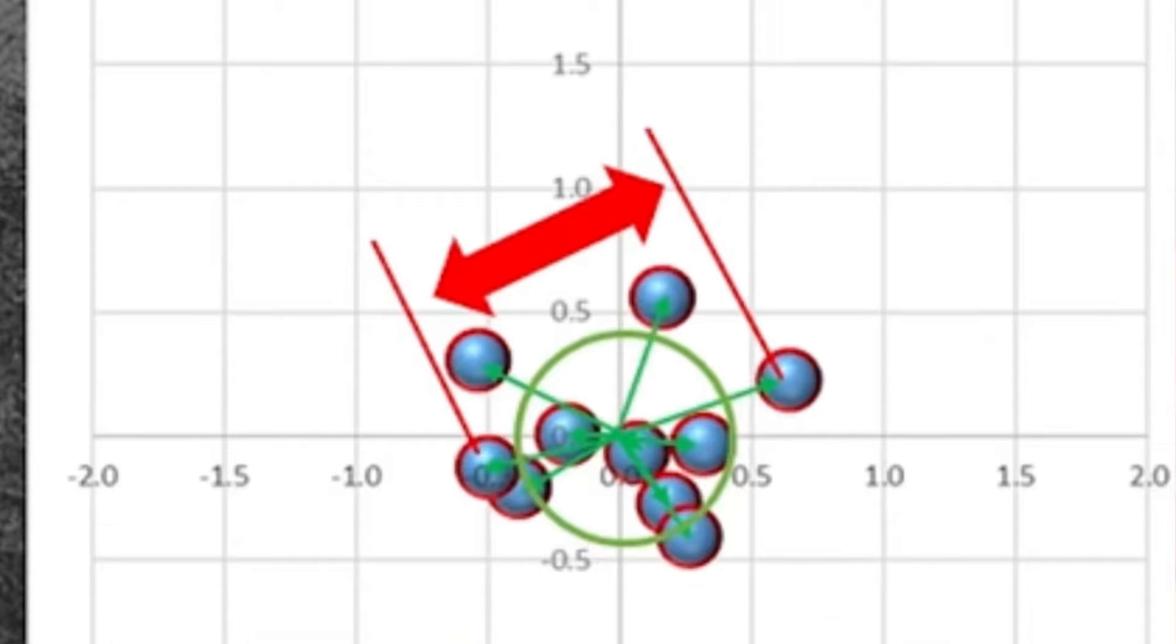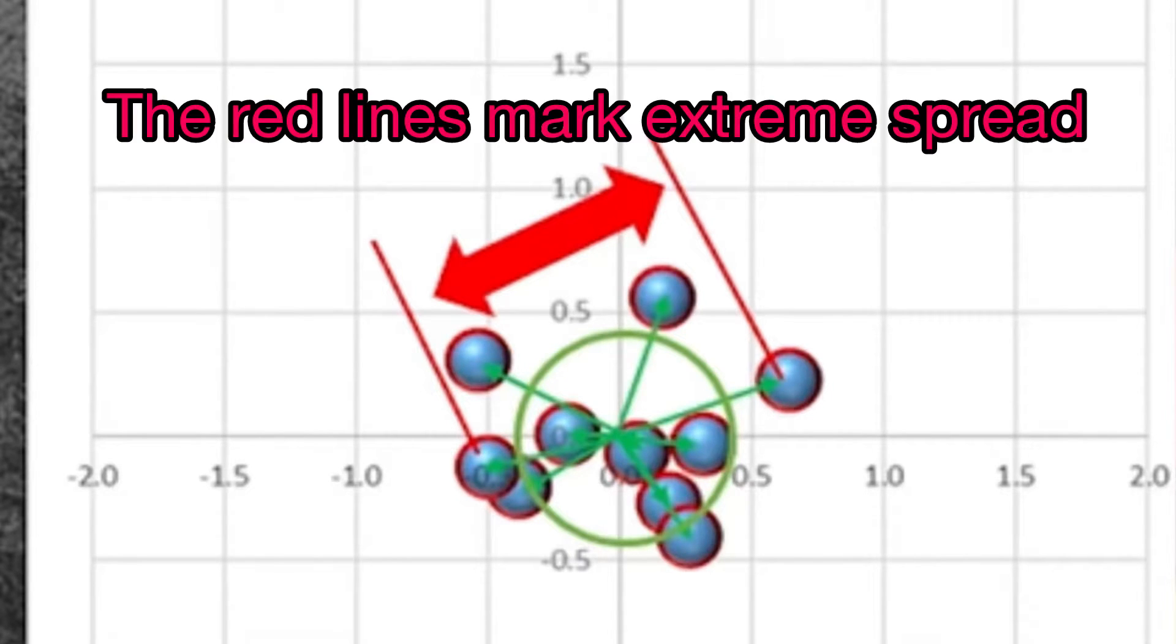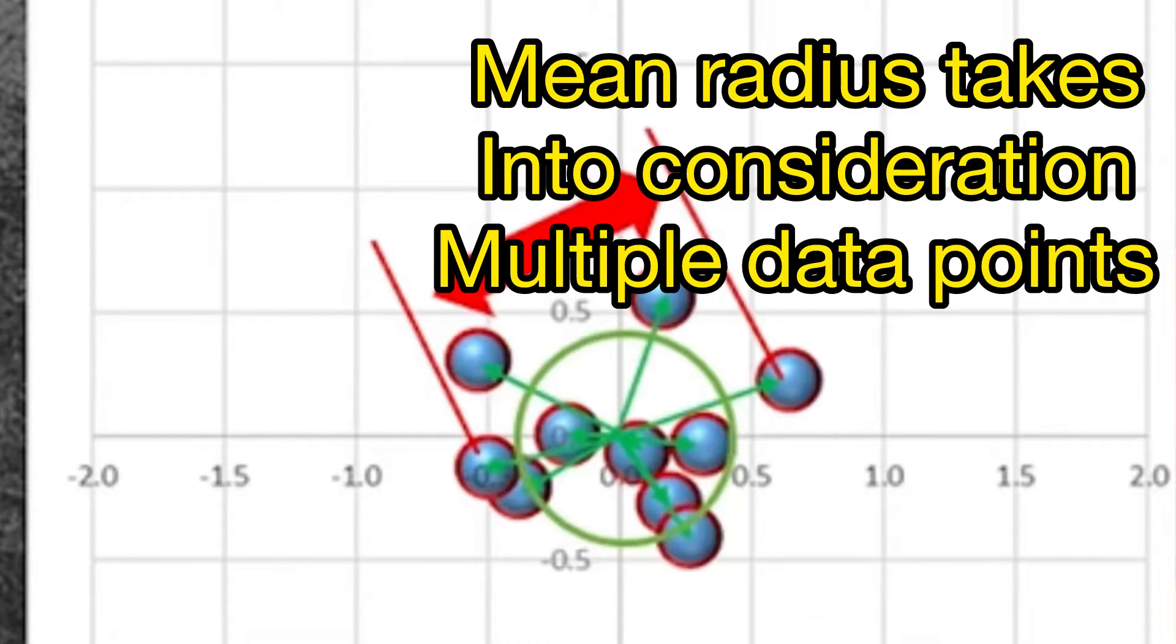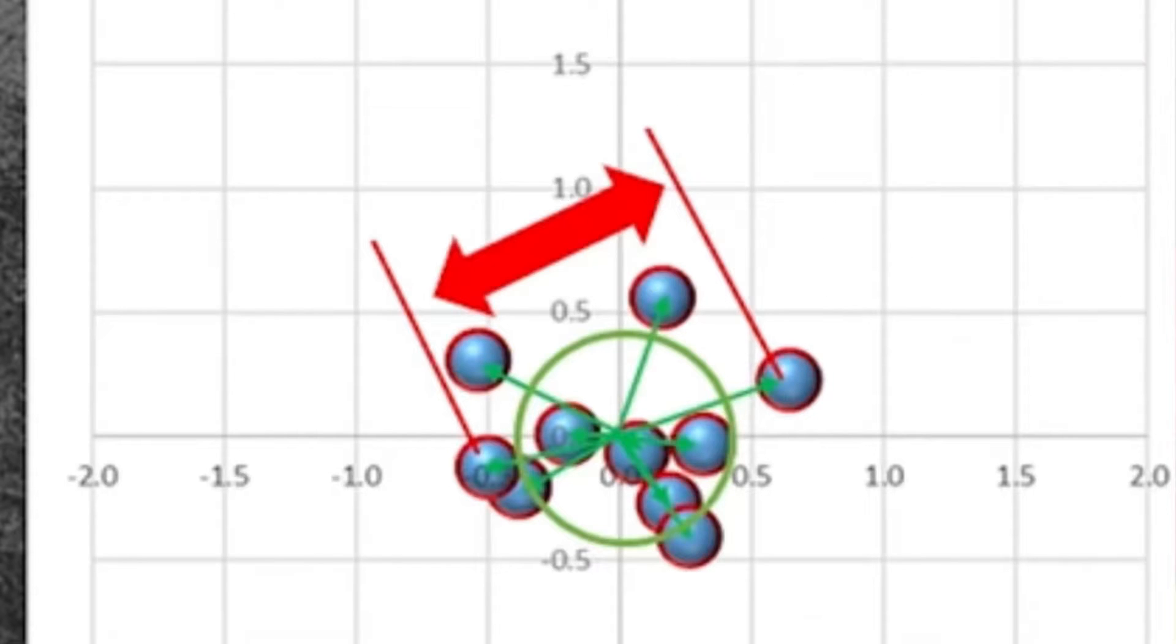Unlike just measuring extreme spread, that uses two data points that shows you the distance of the two furthest shots apart, and that's all you know. But with mean radius, the thing about that is, every additional shot gives you an additional data point that gets measured. So, let's get to this, and let's talk about how we do that.